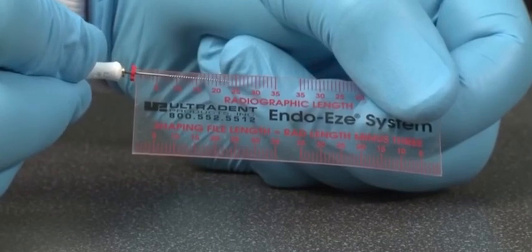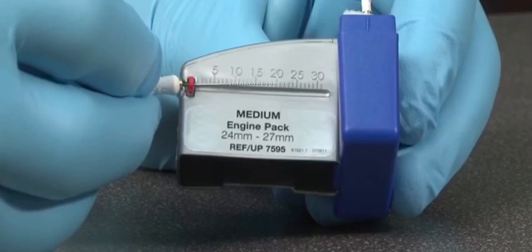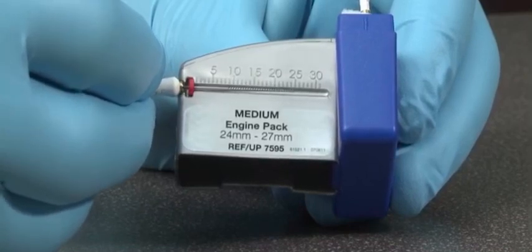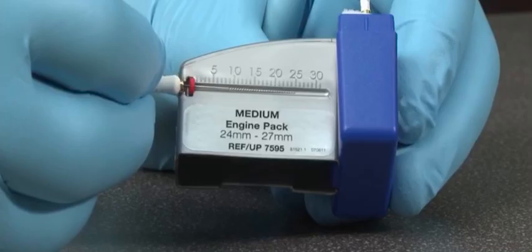Determine the working length using an endodontic ruler. To establish the working length, subtract 0.5 to 1 millimeter from the electronic length.